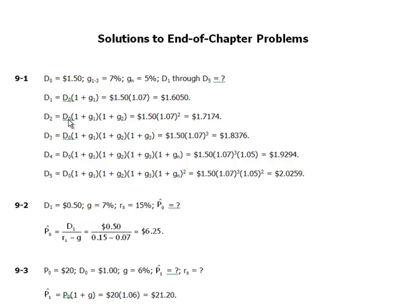D2 is D1 times (1 + g), and since both G1 and G2 are 7%, D2 = 1.5 × 1.07² = $1.7174. For D3, it's 1.5 × 1.07³ = $1.8376.